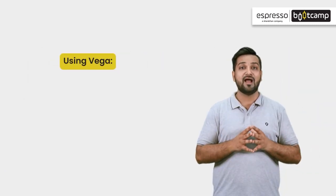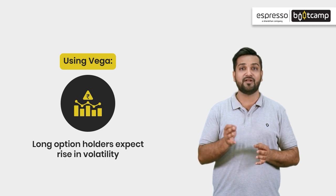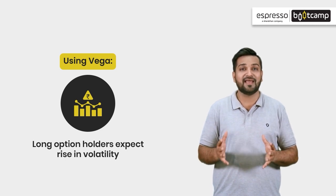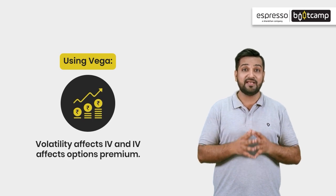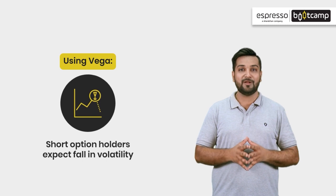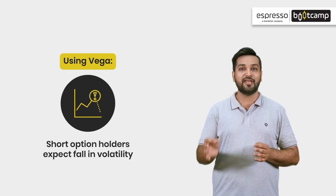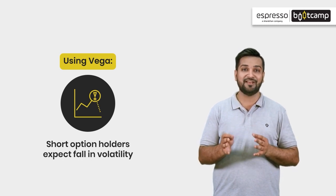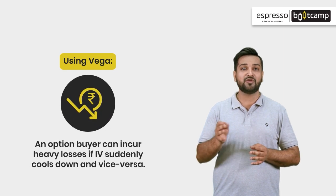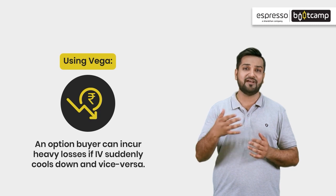Now let's learn how Vega is used. Long options का Vega positive होता है, और इसलिए एक long option holder market में volatility बढ़ना expect करता है। Volatility से IV बढ़ती है और इसके वजह से option premium भी बढ़ता है। और बिल्कुल इसके opposite, short options का Vega negative होता है, और एक short option holder volatility कम होना expect करता है, जिससे option का premium decrease होता है। एक long option holder को अचानक volatility cool off होने के कारण heavy losses हो सकते हैं, and vice versa.